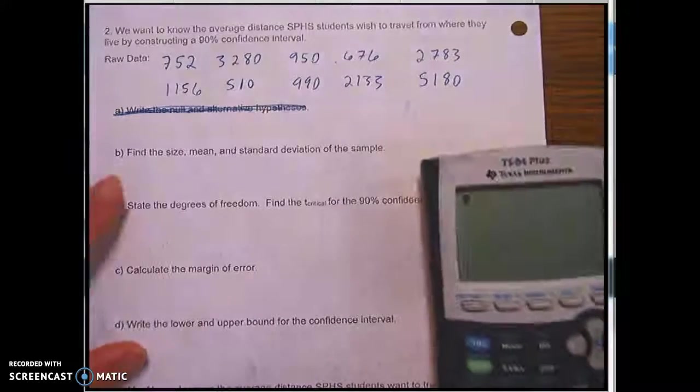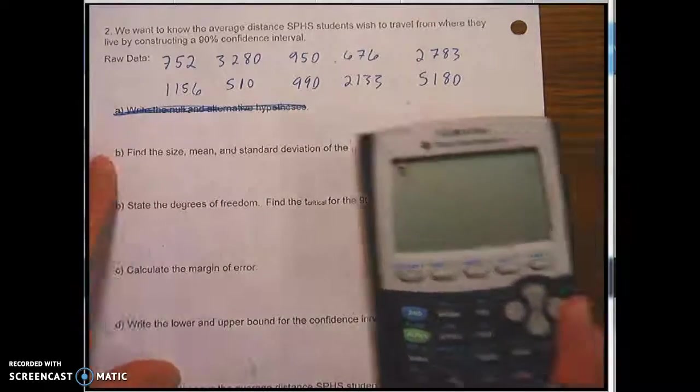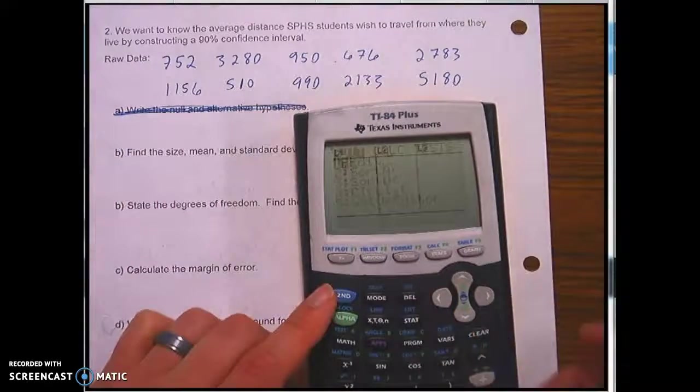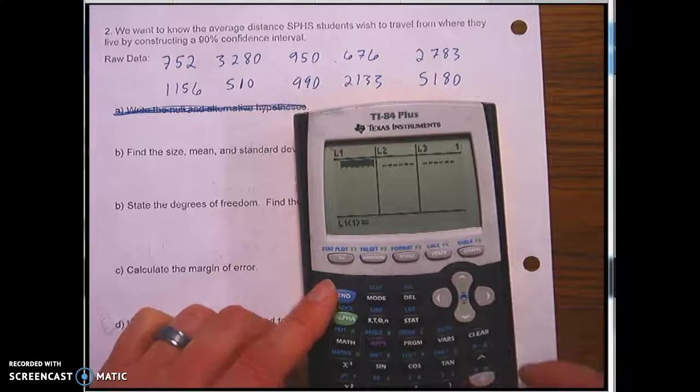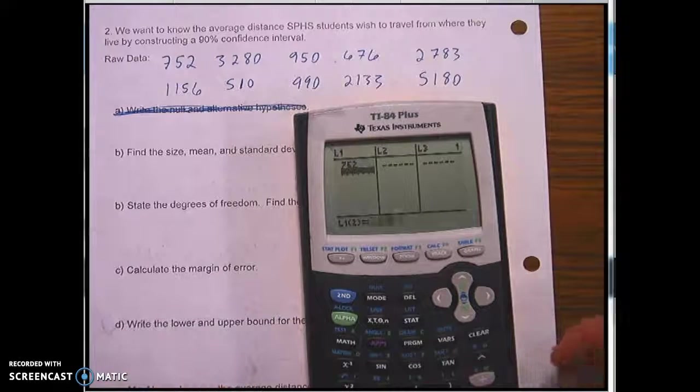But I'm going to do the same thing to get the size, mean, and standard deviation of the sample. I'm going to do stat, edit, stat, calc 1. Let me type in these values really quick. We've got 752, 3280, 950,